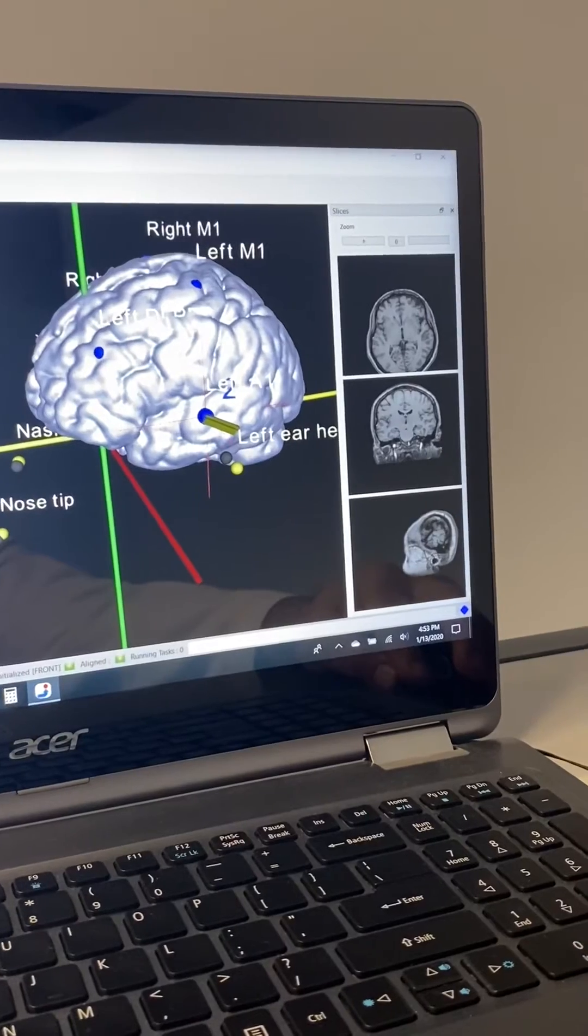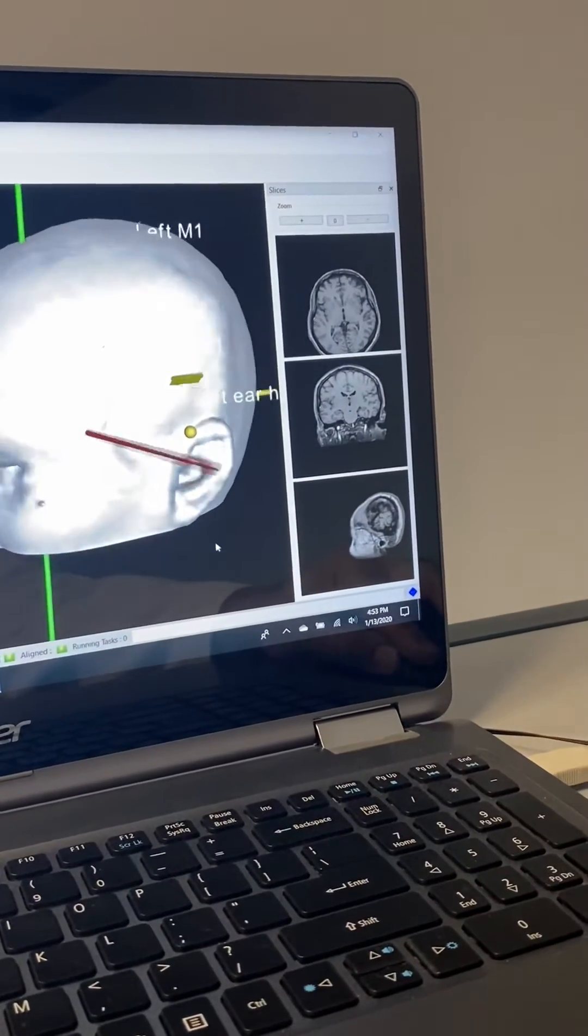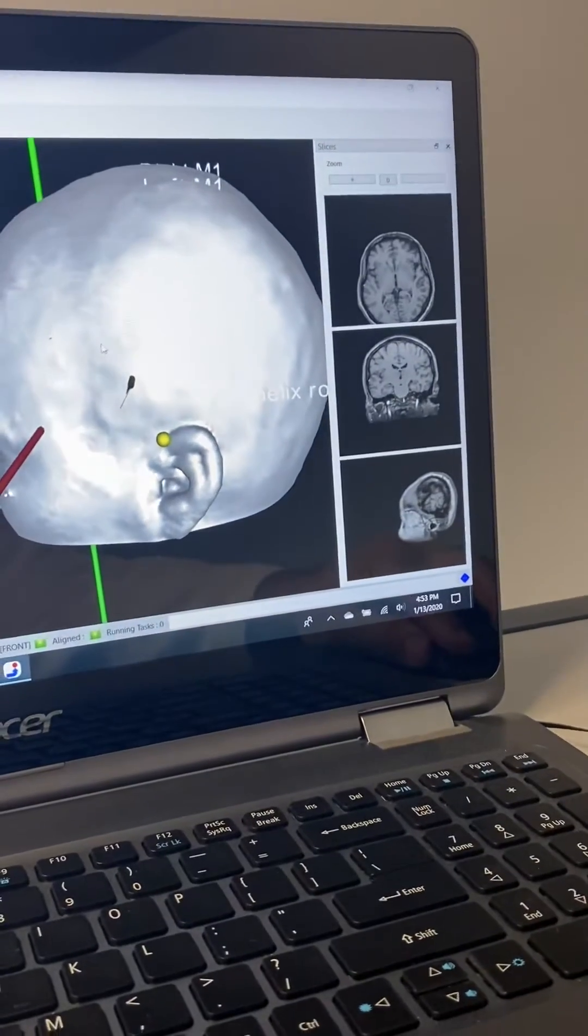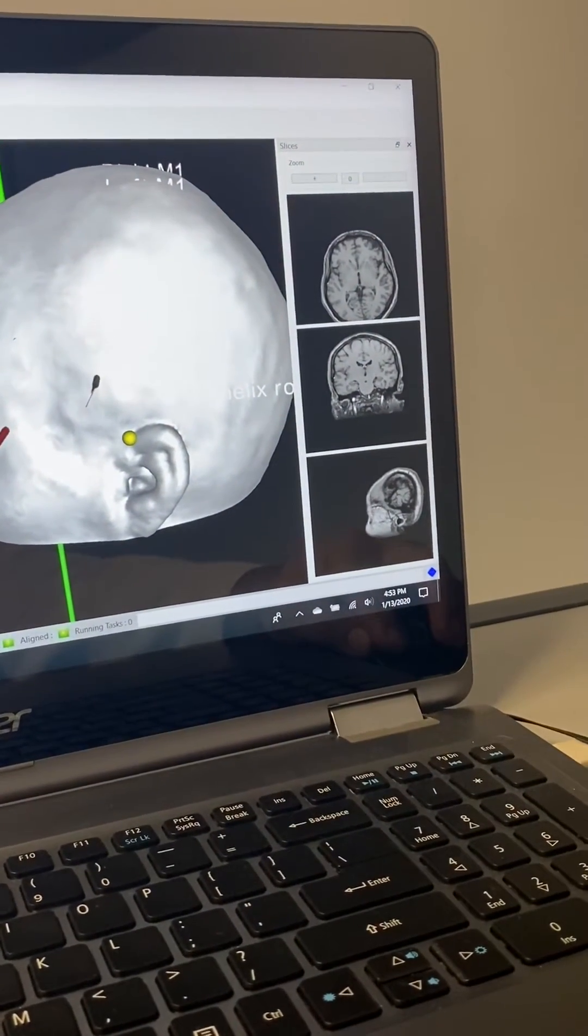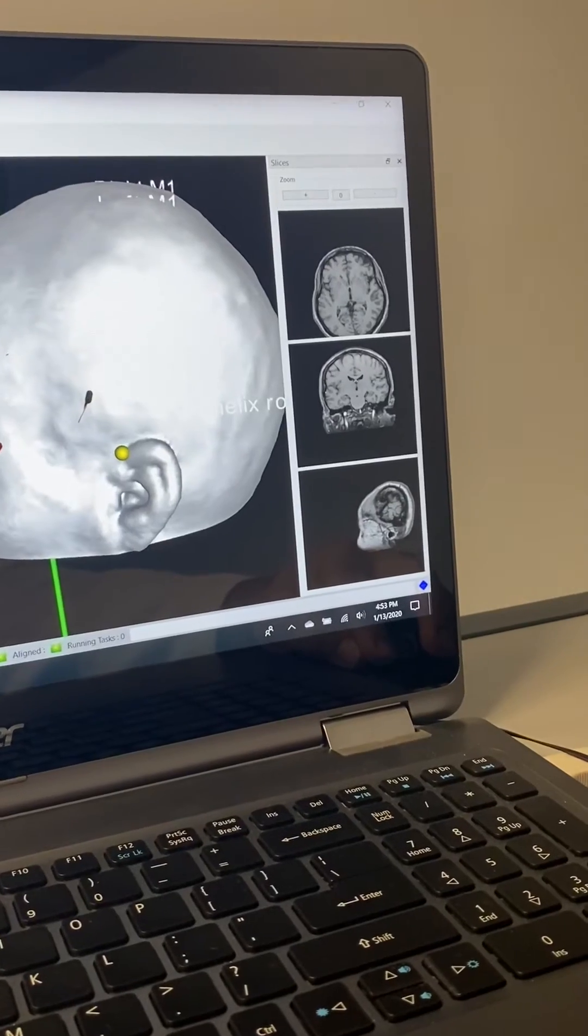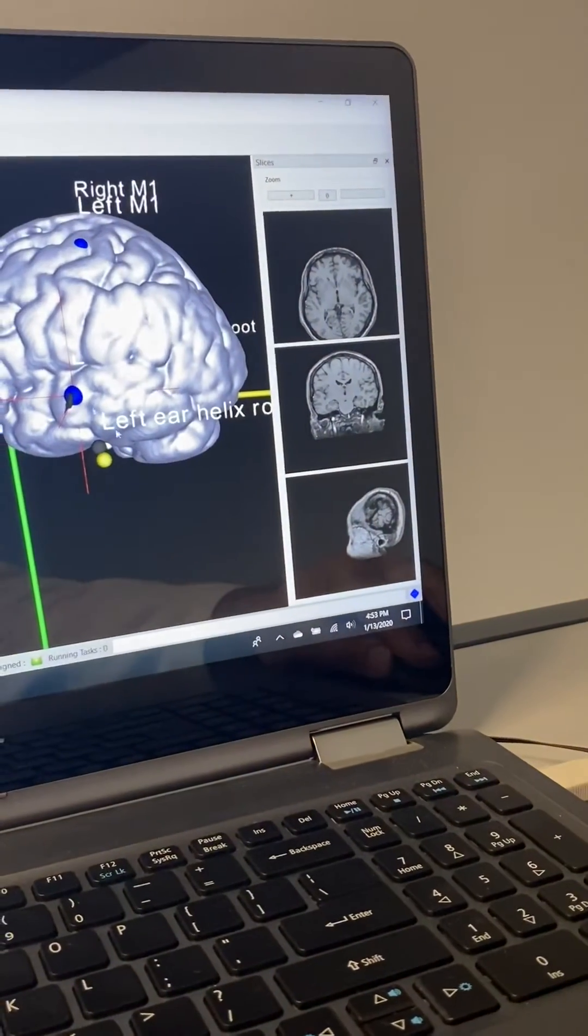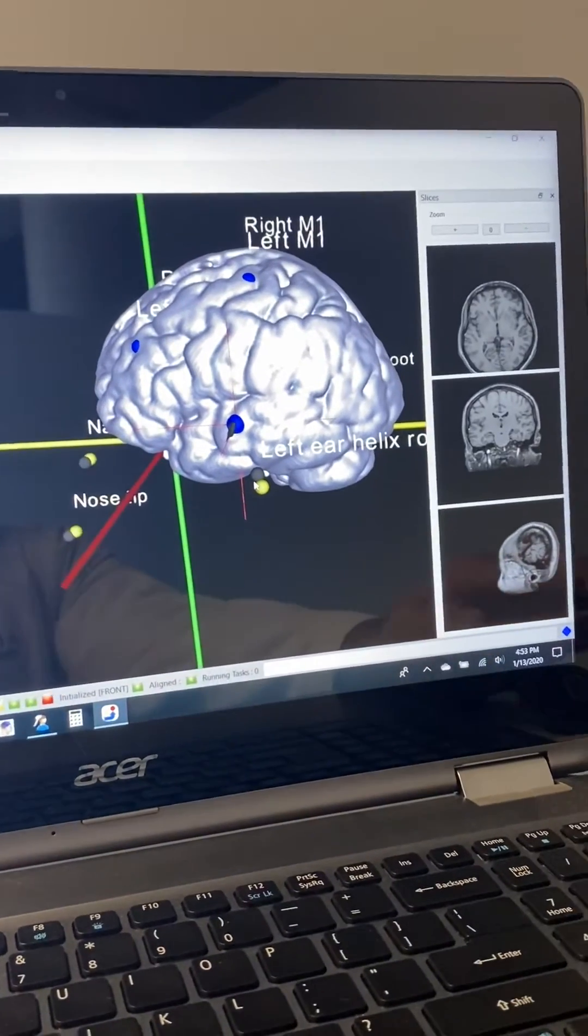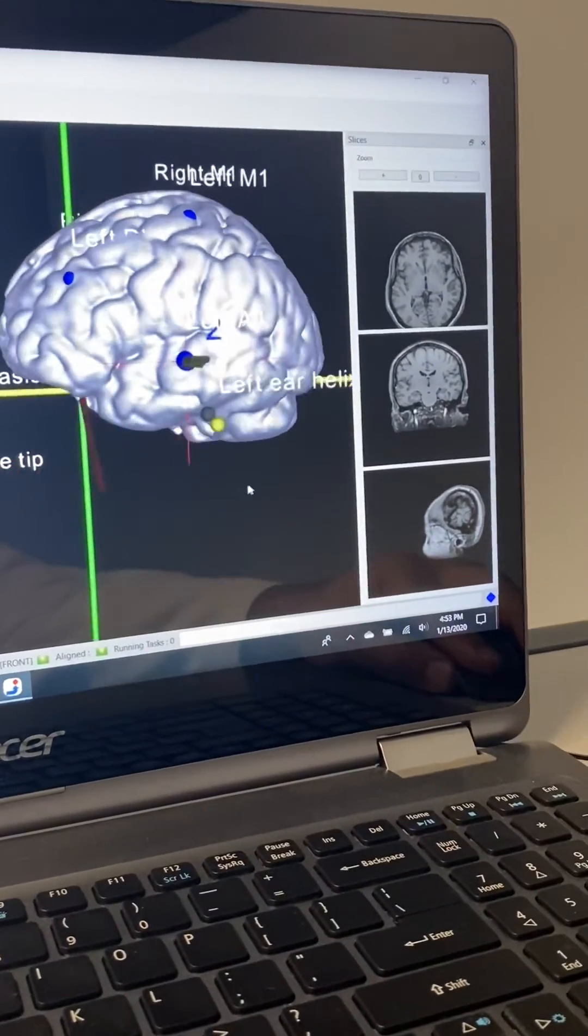I'll show you the outer edge of the skull here, and this is what we're stimulating here, right above the ear, and underneath that, if I take the skin rendering off, you'll see the target here. This is just awesome. TMS under navigation and process.